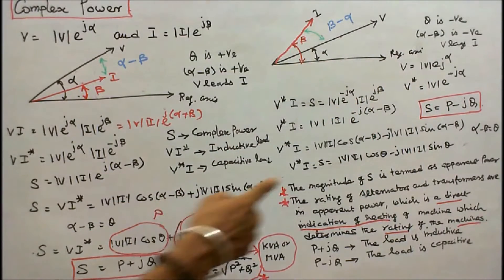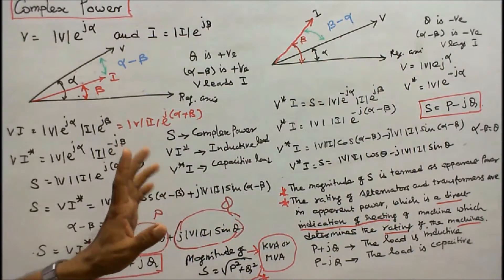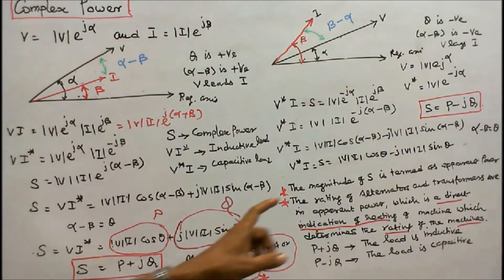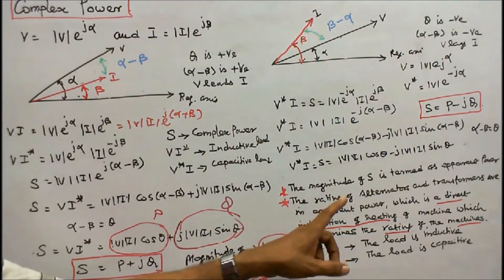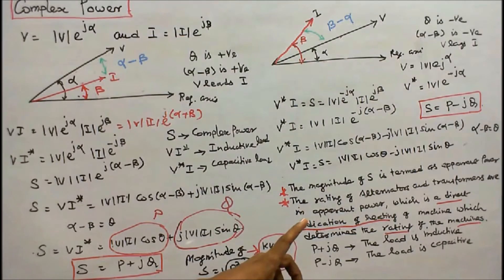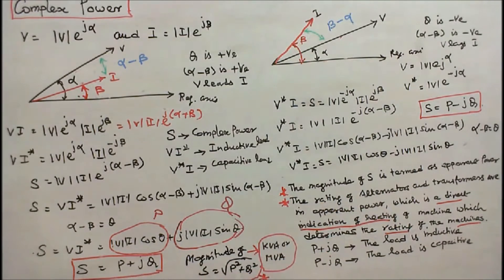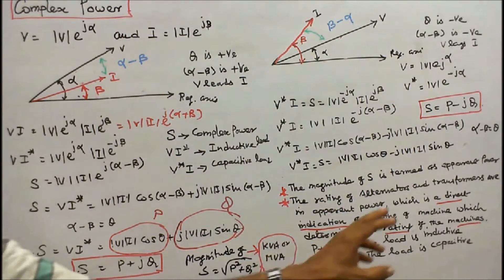The magnitude of S, equal to the square root of P squared plus Q squared, is termed as apparent power. The rating of alternators and transformers is expressed in apparent power, either in KVA or MVA, which is a direct indication of the heating of the machine and determines the rating of machines.